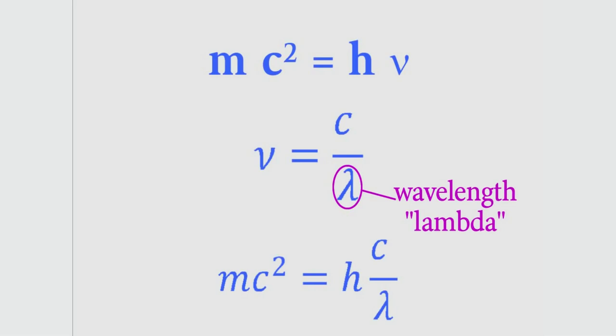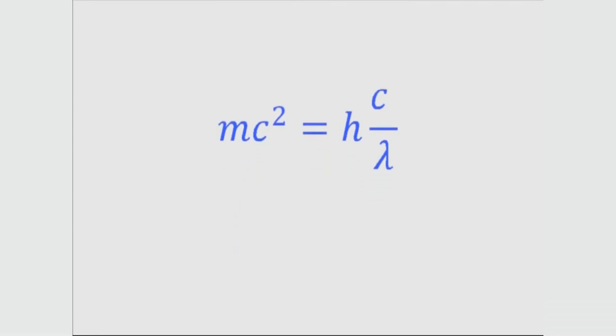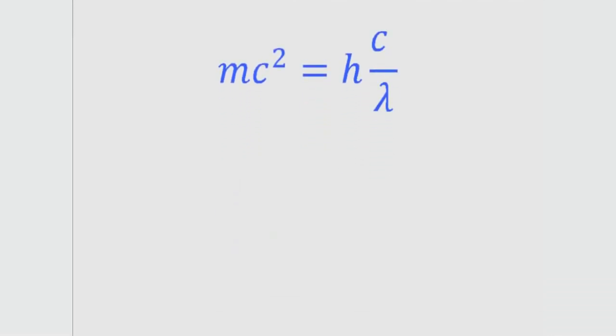If de Broglie was right that a particle can act like a wave, now we can figure out its wavelength. We just need to get lambda, the wavelength, all by itself in this equation. When we do, here's what we get. And now we can simplify that a bit by making one of the c's cancel out.